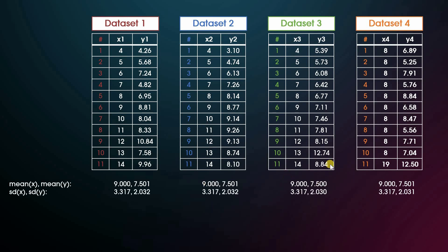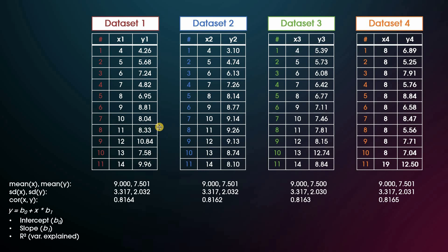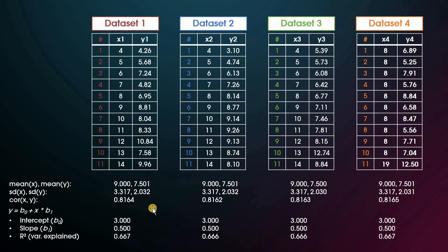The standard deviation of the x values is identical and is almost identical for the y values. The correlation of x and y within each data set comes down to 0.816. If you were to create a linear regression of x and y values, following a formula to predict y based on x with some multiplication coefficient — the slope — and some intercept that you add, you would get identical coefficients for the linear model for each of these four data sets and an almost identical r-squared, which is the variance explained.